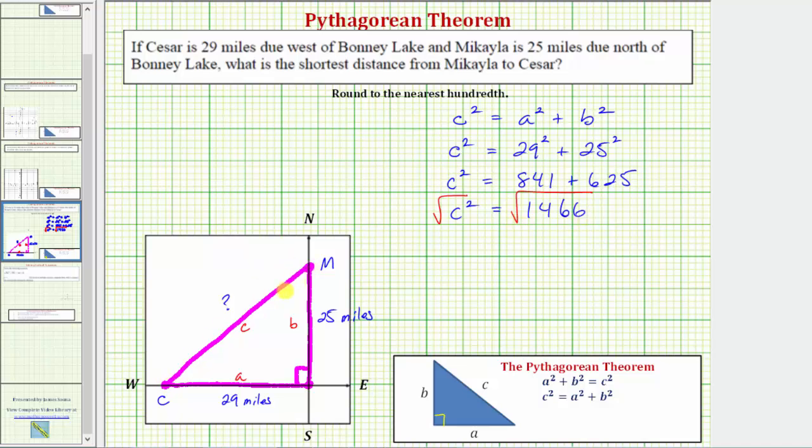And because c is a length, we know c must be positive. So the square root of c squared equals c. And because the question is asking us to round to the nearest hundredth, there's no need to try to simplify the square root. We'll use the calculator and get a decimal approximation.